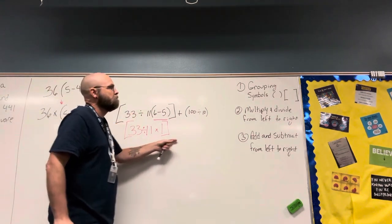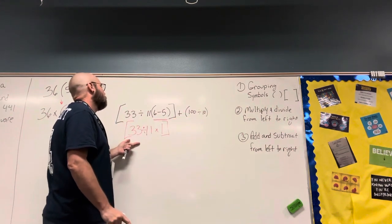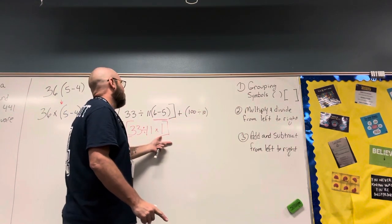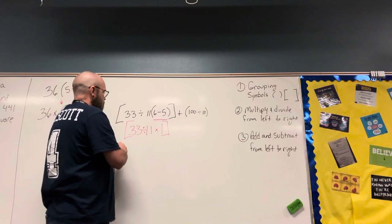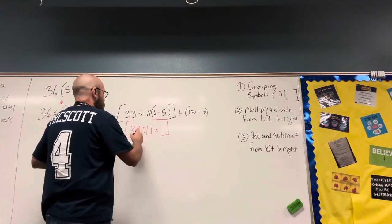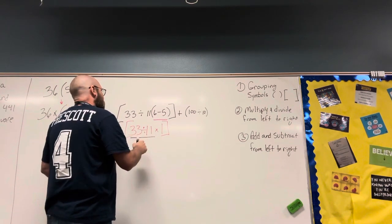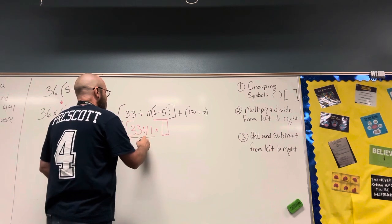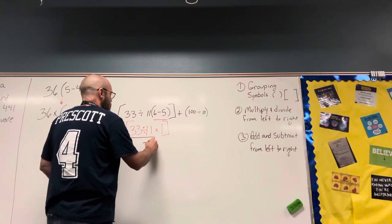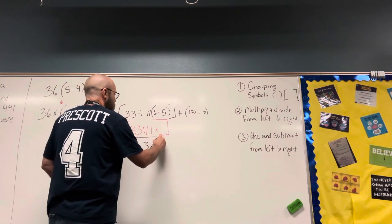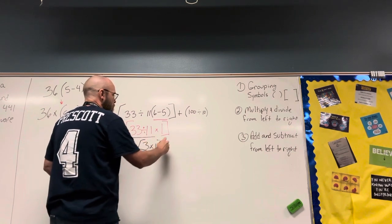I don't have any other grouping symbols, so I multiply and divide from left to right. Since the division in this problem comes before the multiplication, 33 divided by 11 is 3 times 1.